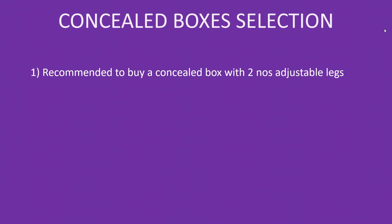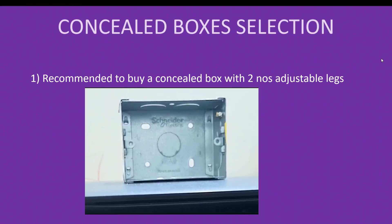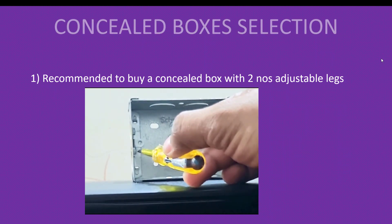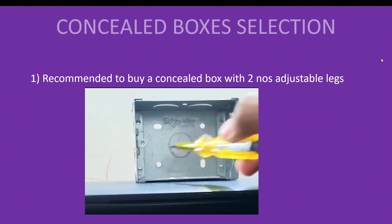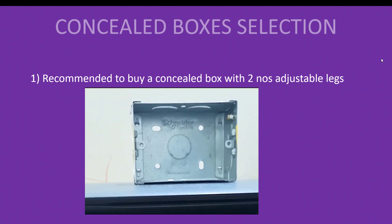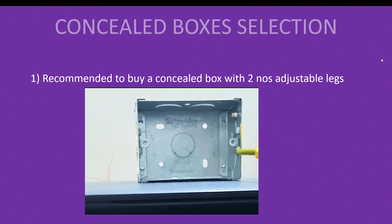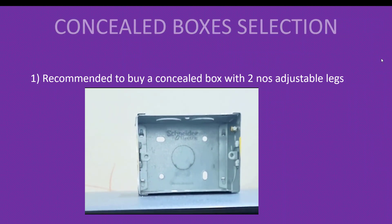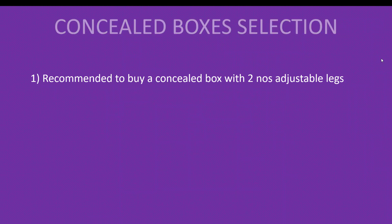There are some points to be taken care of while selecting flush boxes. The first one is: it is recommended to buy a concealed box with two adjustable legs. Plates are screwed into these legs, and preferably these two legs shall be adjustable. If there is a minor error in the fixing of concealed boxes, you can correct it using the adjustable legs. This is a small but very important point — it will help you to keep the alignment of the switchboards.